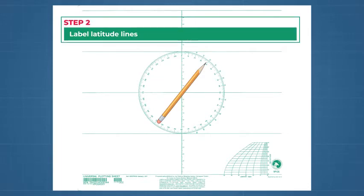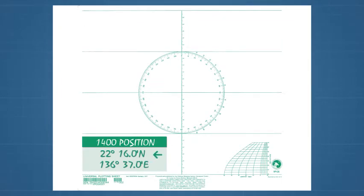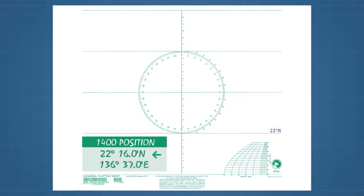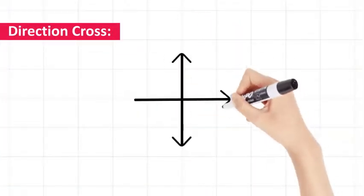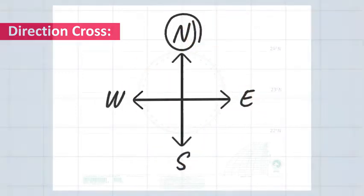Step 2: Label latitude lines. The 1400 latitude in the question is 22 degrees 16 minutes north. Label the bottom latitude 22 degrees north, middle 23 degrees north, and top 24 degrees north. Note, north latitudes increase upwards. Draw or imagine a direction cross for reference if needed.